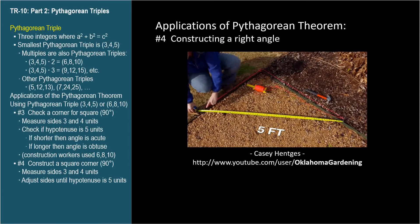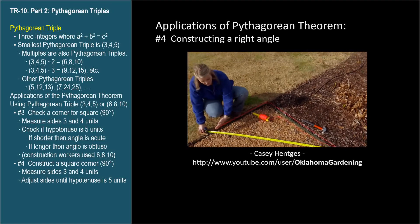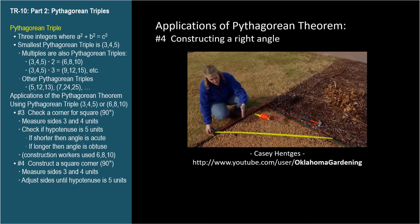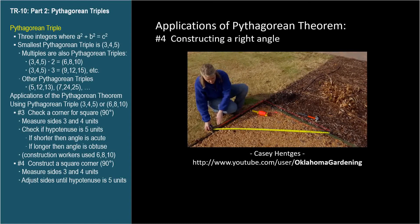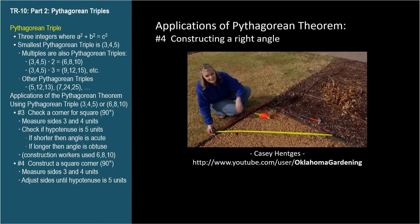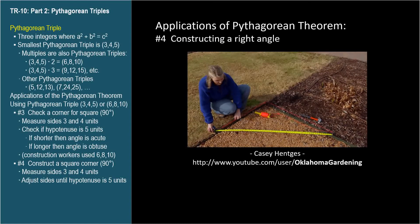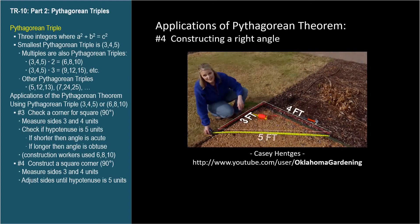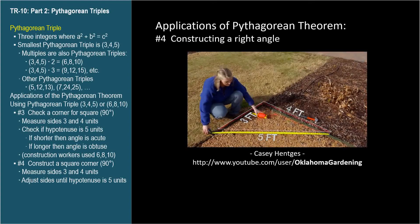And that distance should equal five feet. If it's more or less, you might need to move one of those points to make sure that that hypotenuse is five feet. So here we have three, four, and five. And therefore, we know that this is a square corner.